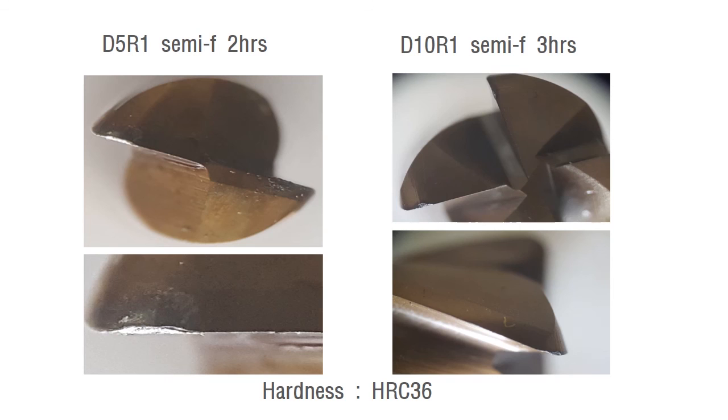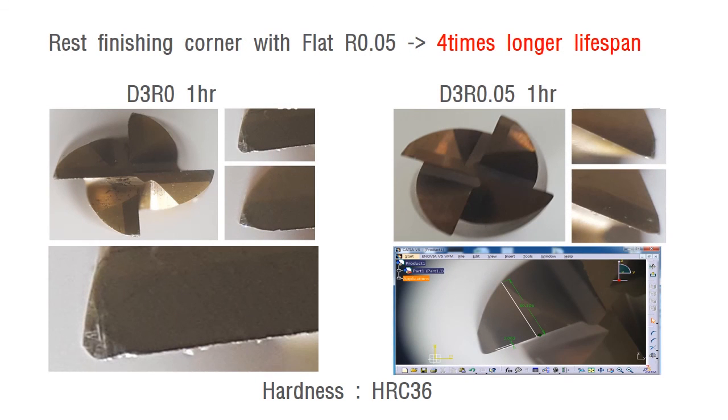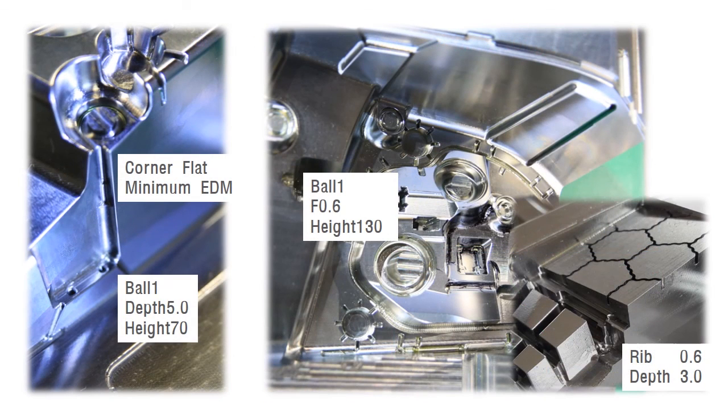As you can see, it guarantees faster machining and longer lifespan. These are comparing results between flat end mill and 0.05 of Radius tool condition after machining of 1-hour corner angles. Using Radius 0.05 makes lifespan 4 times longer. It can machine on the lowest depth as possible with every shrink-fit tools.